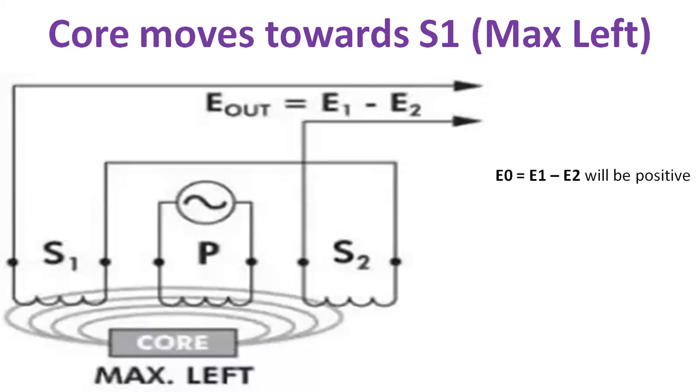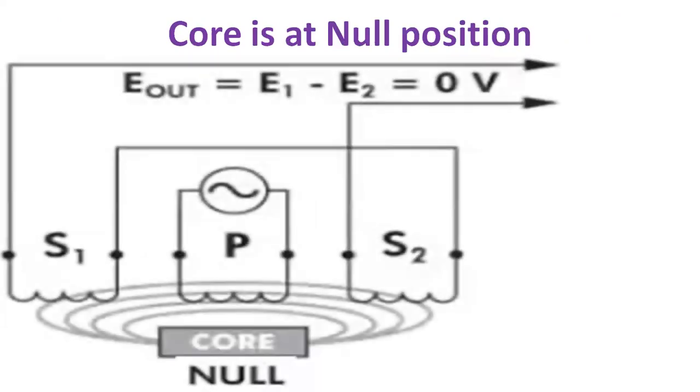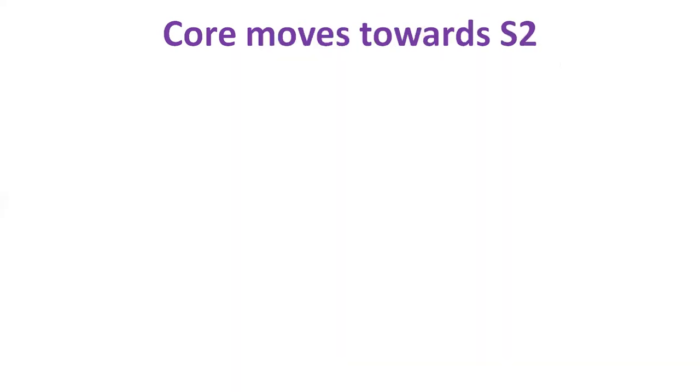The second case is when the core is at null position. Then the flux linkage with both the secondary windings will be the same. So, the induced EMF E1 and E2 in both the windings will be the same. Hence, the net differential output E0, that is E1 minus E2, will be zero. It shows that no displacement of the core.